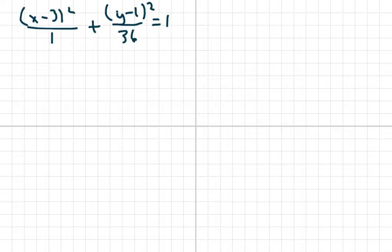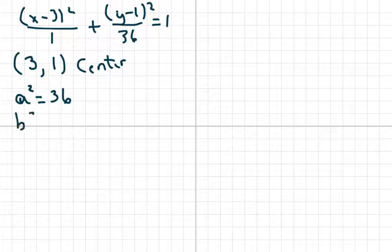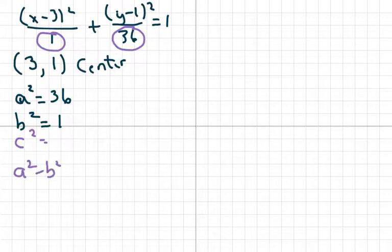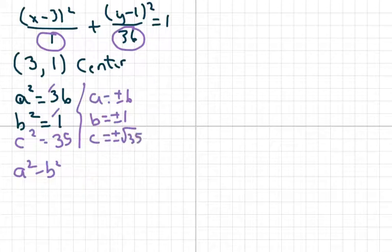The first problem: we know the center is your (h, k), so in this case our center is going to be (3, 1). We know a² = 36, and a is always your bigger number. b² = 1. Because these two numbers are so far apart, we know it's going to be skinny. The major axis is going to be on the y-axis because the bigger number is under y. c² = a² − b² = 35. So a = ±6, b = ±1, and c = ±√35, which is very close to 6.